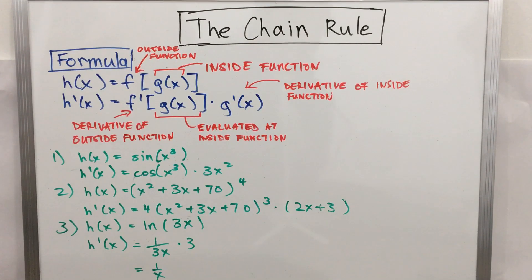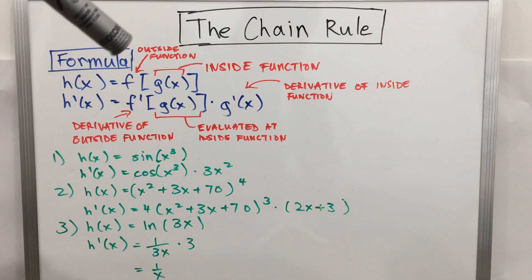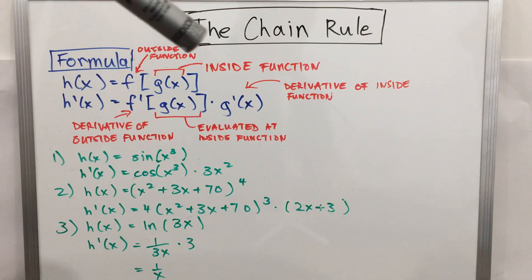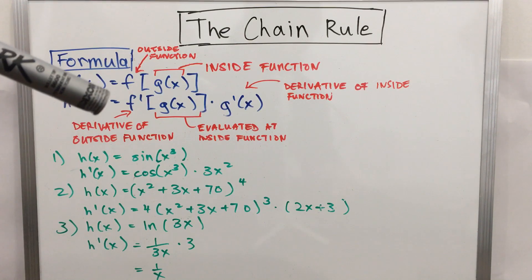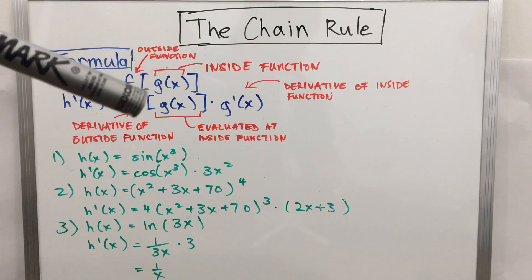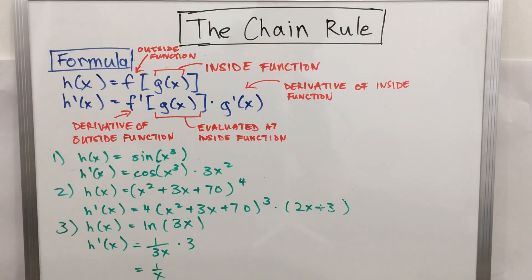We're going to be learning the chain rule in this video. The formula for the chain rule is: when you have a function h(x) = f(g(x)), with f being the outside function and g(x) being the inside function, the derivative is h'(x) = f'(g(x)) times g'(x).